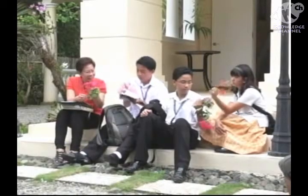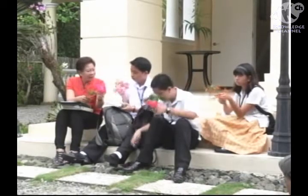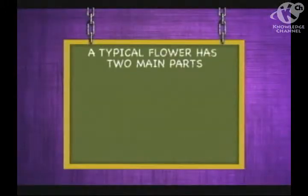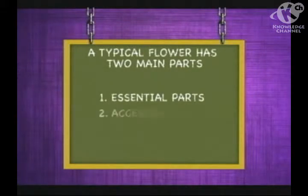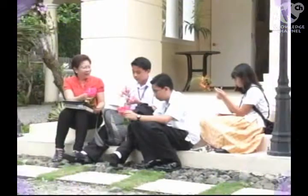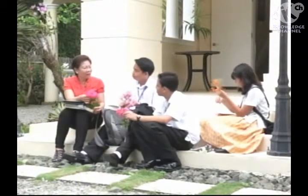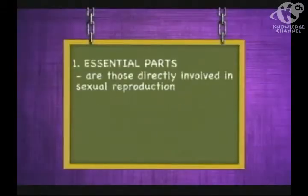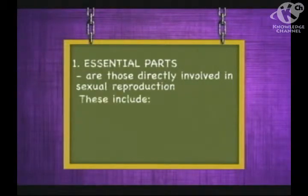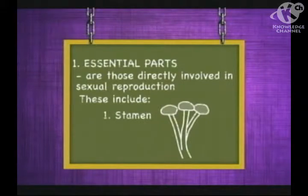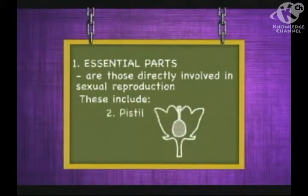Just like the leaf, the flower is an outgrowth of the stem. A typical flower has two main parts: the essential parts and the accessory parts. Let us now identify the essential parts of the flower. The essential parts of a flower are those directly involved in sexual reproduction. These include the stamen and the pistil.